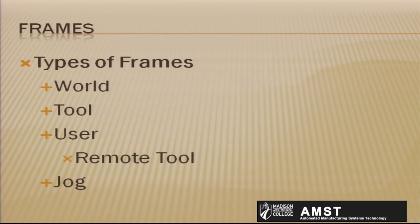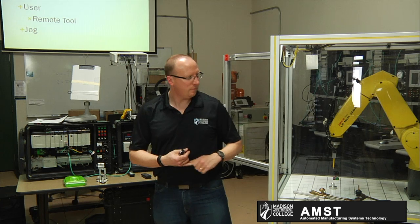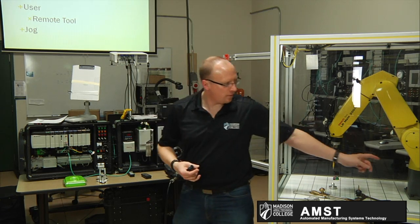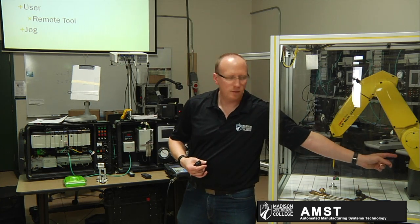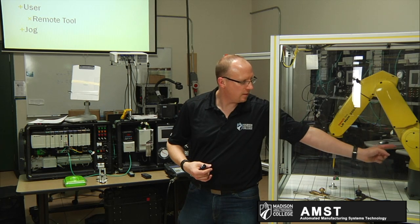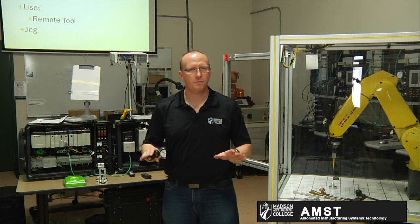The world frame is your main frame from the robot. All the other frames are referenced by that world frame. The world frame is through the center of joint one and the center of joint two. That's the origin — that's a point in space. It's 0,0,0 from the factory. All the other frames are referenced off that frame.